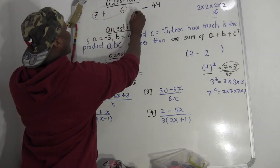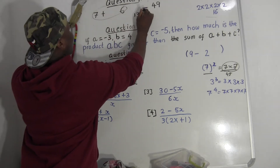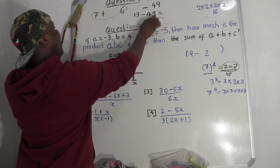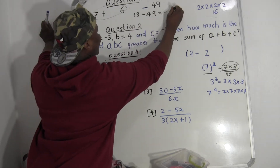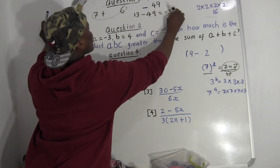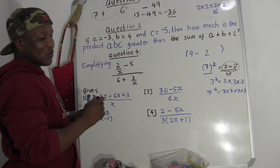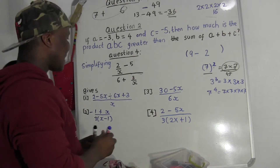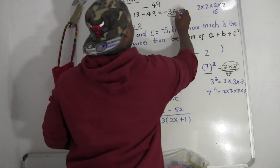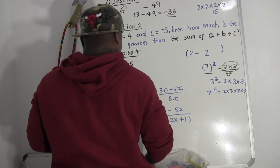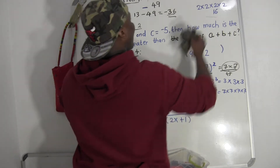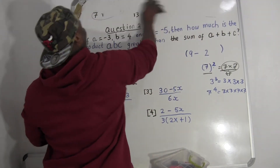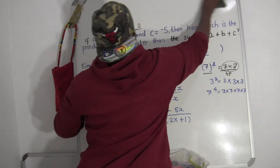If I write this out, I get thirteen, and we still have minus forty-nine. Thirteen minus forty-nine equals minus thirty-six. For the whole expression, when you simplify, the answer is minus thirty-six. Our final answer is minus thirty-six.